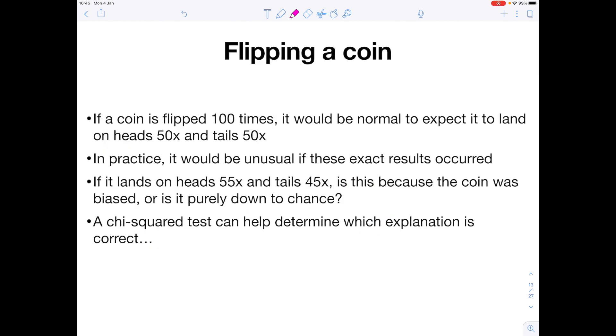So we'll take the flipping a coin example because I think this gives a really nice clear image of how the chi-squared can be used. If a coin is flipped 100 times it would be normal to assume that it would land on heads 50 times and tails 50 times, but in practice we know that it's unusual for these exact results to occur. If it lands on heads 55 times and tails 45 times, is this because the coin was biased or is it purely down to chance? And the chi-squared test will help us determine which explanation is correct.